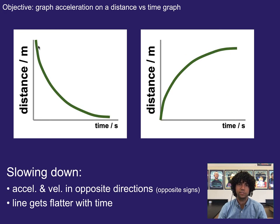And things slowing down start with a steep slope and then end with a flat slope, kind of like this one here, but again, just in opposite directions.